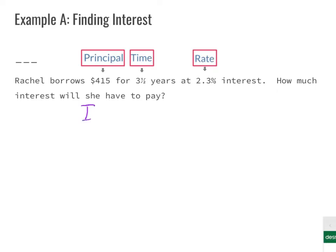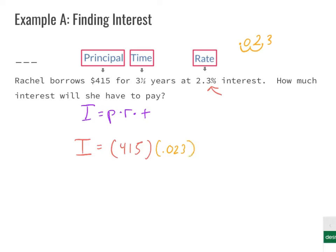Writing our formula: I = P × R × T. We substitute in our known variables. We don't know I, so we leave that blank. Our principal is $415. Our rate is 2.3% — we need to convert that to a decimal by moving the decimal two places to the left, giving us 0.023. Our time is three and a half, written as 3.5. Then we multiply all these together.